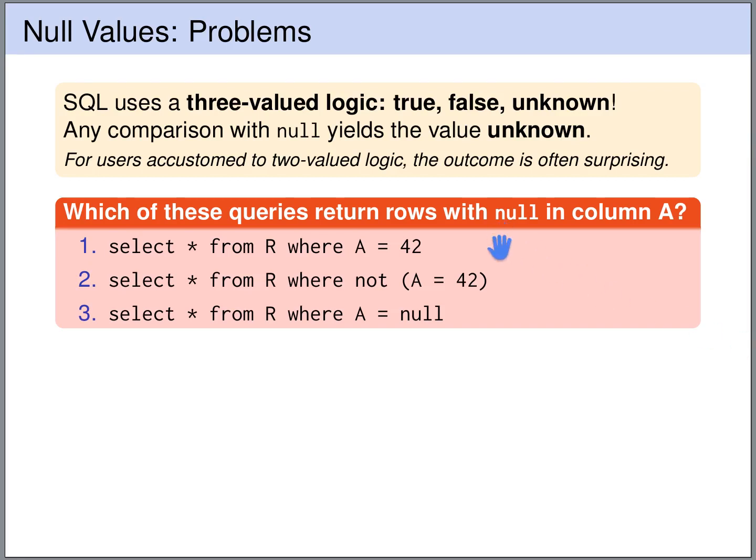So let's have a look at these queries. Which of these queries returns the rows where the column A is NULL? Let's start with query 1. So we select all the rows from R where A is equal to 42. I think we all agree that this query should not return the rows where A is NULL.